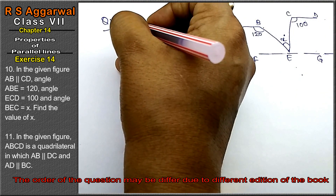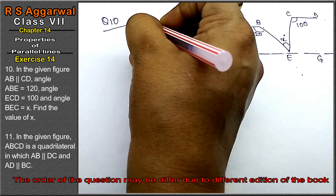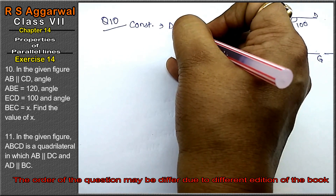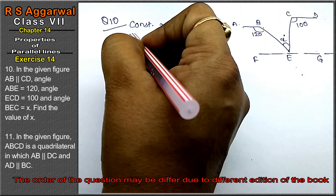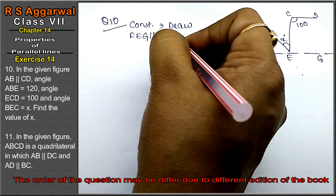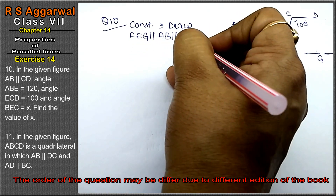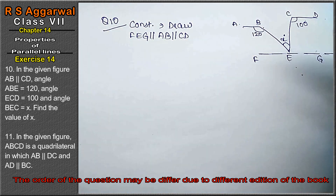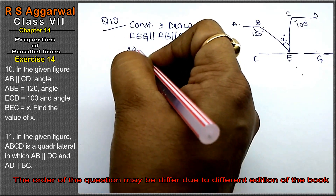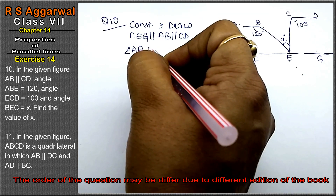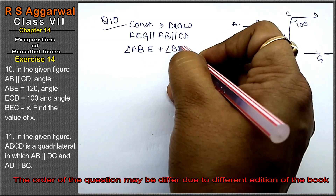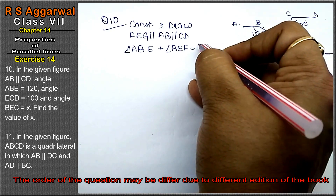Now, AB is parallel to CD, and FEG is parallel to AB and parallel to CD. So all three are parallel to each other. Now, angle ABE plus angle BEF equals to 180 degrees.